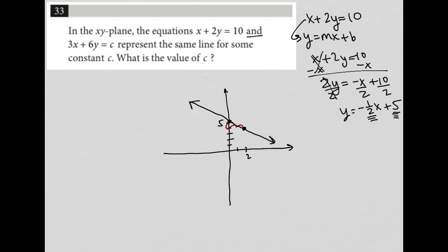It says, and 3x plus 6y equals c, represent the same line for some constant c. So what does that mean? There's some value of c that makes this equation here give me the exact same graph. Well, if it gives me the exact same graph, that means it must also give me the exact same equation. So let's convert this to slope-intercept form as well.